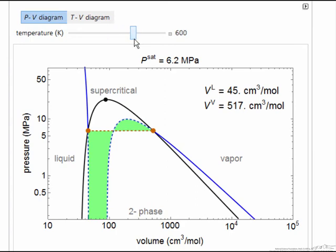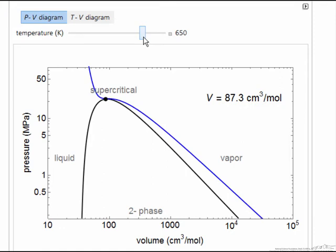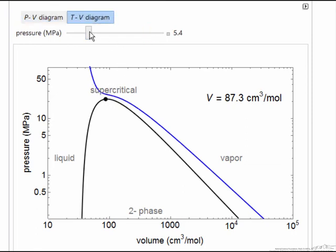And I can increase the temperature enough, so there we're pretty close to the critical temperature isotherm, and then we can certainly go above that. And then correspondingly on the temperature-volume diagram.